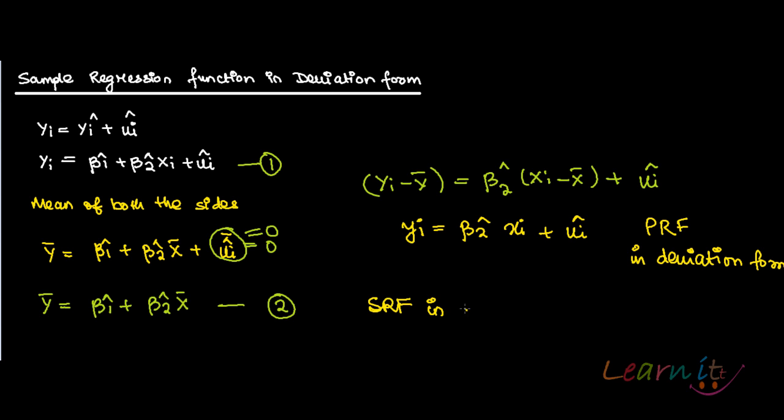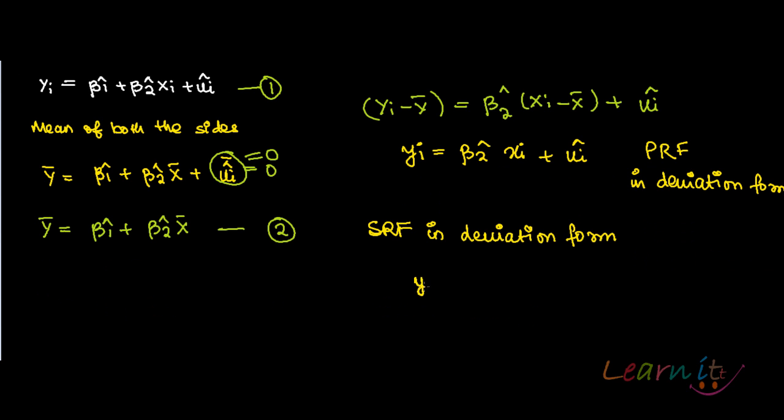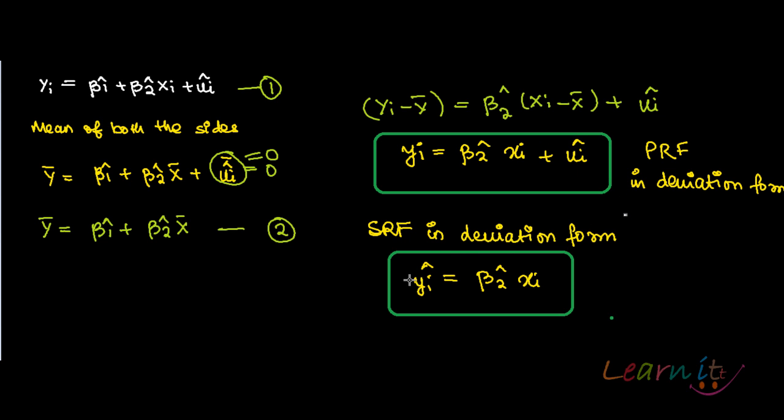And the sample regression function in deviation form could be written as: yi hat equals to beta 2 hat xi. So this is your sample regression function and this becomes your population regression function.